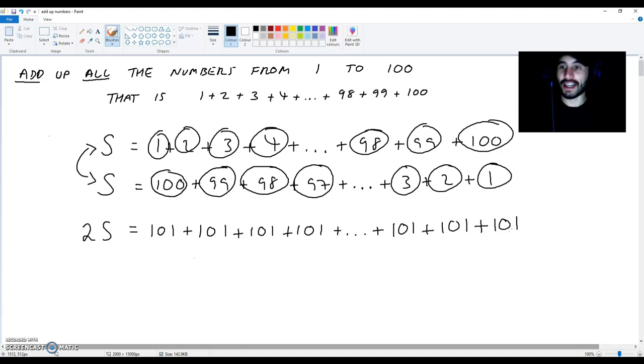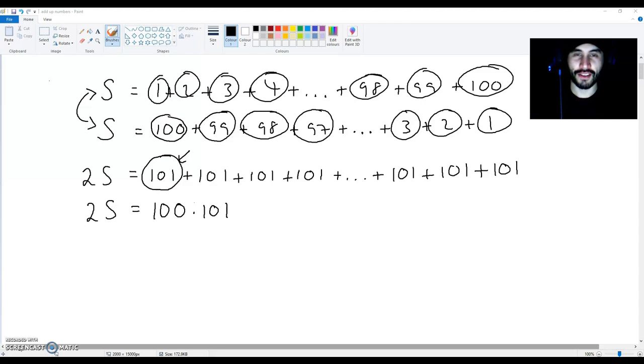Look what has happened when we added up both of these sums. We end up getting 2S is equal to 100 times 101. We are getting 100 of these right here. We've just shown this. Now, from this position, all we have to do is isolate S in this equation to get the sum of all the numbers from 1 to 100. So, let's do this.